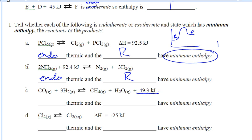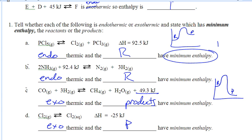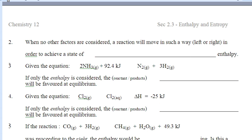In C, it's exothermic, so I'm drawing this out. Look where the products are compared to the reactants — the products have minimum enthalpy. We want to look at what has the minimum energy, because in the chemical world, systems want to have minimum enthalpy. They will do whatever it takes to have the lowest energy possible, to achieve a state of minimum enthalpy.